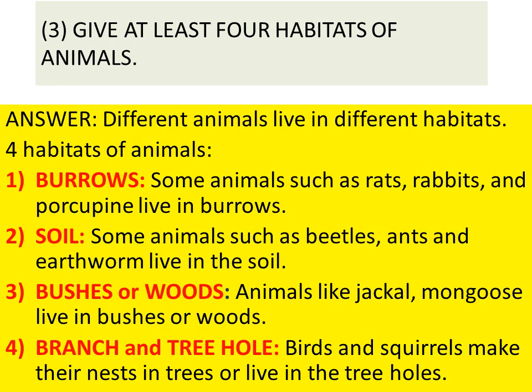Number 3, Bushes or woods — animals like jackal and mongoose live in bushes or woods. Number 4, Branch and tree hole — birds and squirrels make their nests in trees or live in tree holes.